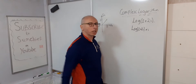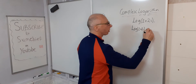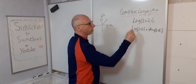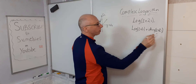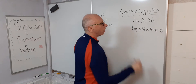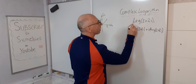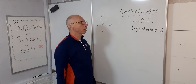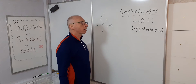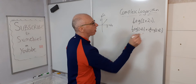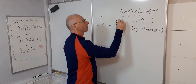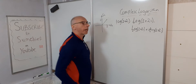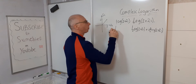And then we add, for the imaginary part, the argument of 2 plus 2i. Notice the straight brackets are for modulus and round brackets are for argument. We've got capital L and capital A — that's because we're looking for the principal argument and the principal log, meaning there's only one solution.